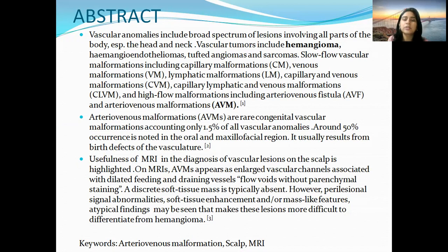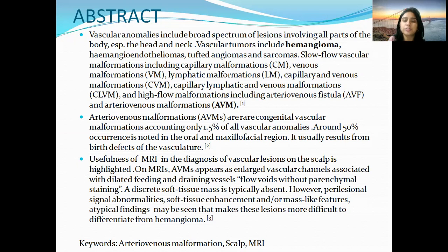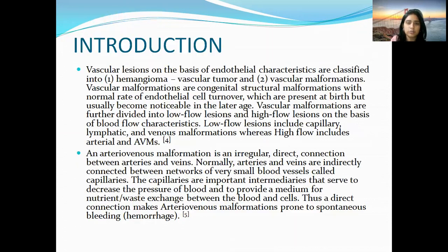On MRI, AVMs will appear as enlarged vascular channels associated with dilated feeding and draining vessels that appear as flow voids without any parenchymal staining. A discrete soft tissue mass is typically absent. However, perilesional signal abnormalities, soft tissue enhancement, and/or mass-like features are some atypical findings which may be seen, making these lesions more difficult to differentiate from hemangiomas.